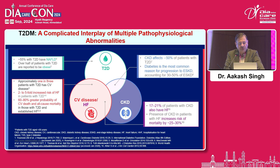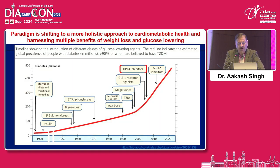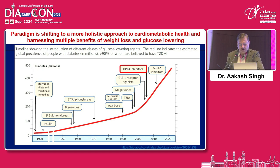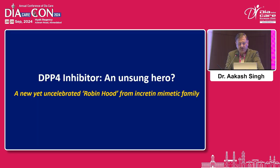A lot of diabetes patients have NAFLD, obesity, CVD like peripheral artery disease, CAD and heart failure. CKD is also very common. Therefore, we need drugs which address cardiometabolic risk and decrease the risk of future CVD events, with the added benefits of weight loss and glucose lowering. We will see the role of DPP-4 inhibitors in this spectrum.